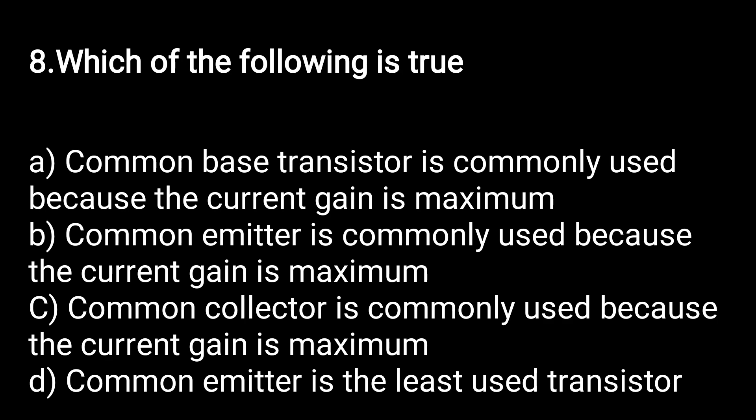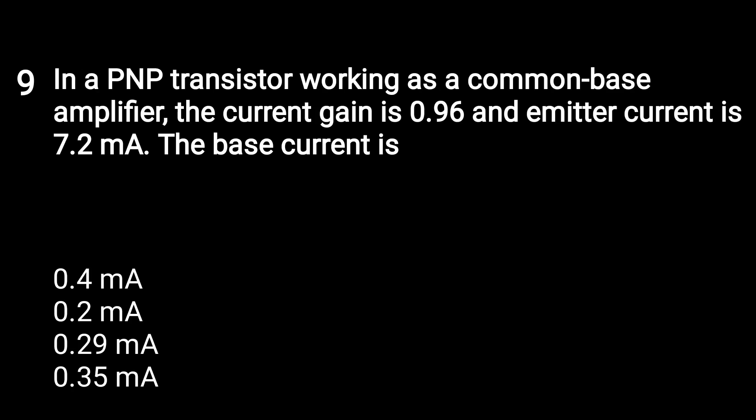Next question: which of the following is true? Options include common base, common emitter, and common collector configurations, each claiming maximum current gain. The correct answer is option B — common emitter is commonly used because the current gain is maximum. We use the common emitter configuration because it provides the highest current gain.